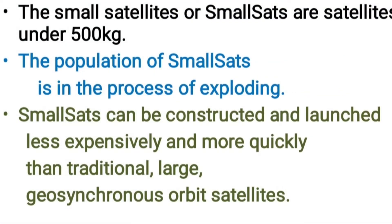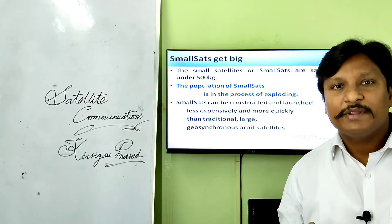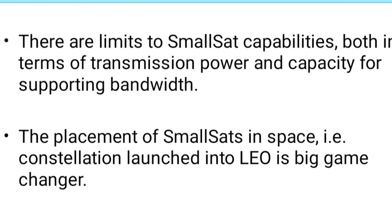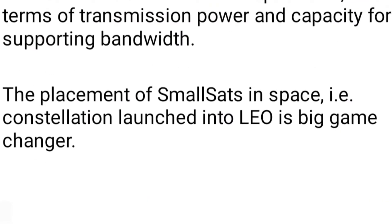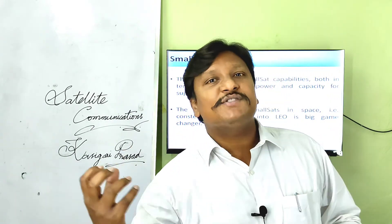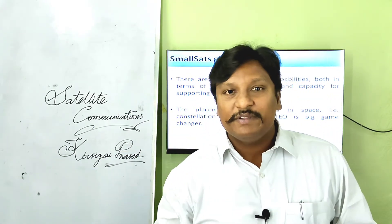Proper design, planning, and development must take place for nano satellites — small-sized satellites at different orbits for providing services. There are limits to small satellite capabilities in terms of transmission power and bandwidth capacity. However, the placement of small satellites in space as a constellation launched into LEO is a big game changer. Taking small satellites and launching them into low Earth orbit in a constellation — many such small satellites placed at low Earth orbit — really makes a big difference.